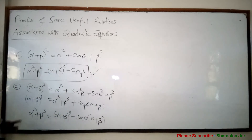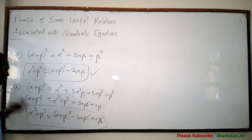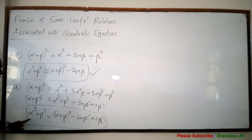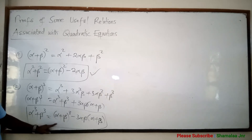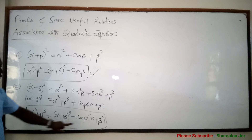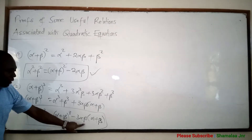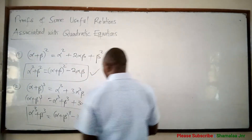So this is very important. When you are asked to form a quadratic equation whose roots are alpha cubed and beta cubed, when you are finding the sum of roots, this relation will be needed. You use it because alpha plus beta is known and alpha beta is also known.